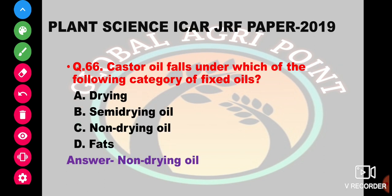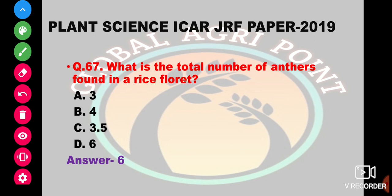Castor oil falls under which category of fixed oils — drying, semi-drying, non-drying, or feed? Castor oil comes under non-drying oil. What is the total number of anthers found in a rice flower? The options are 3, 4, 3.5, or 6. The Gramineae family has 6 anthers, and rice also belongs to the Gramineae family, so the answer is 6.